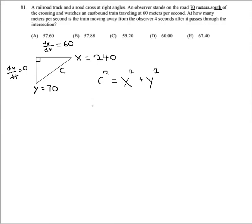Okay, and I'm going to go ahead and take the derivative with respect to time. So I'm going to get 2c dc/dt equals 2x dx/dt plus 2y dy/dt.